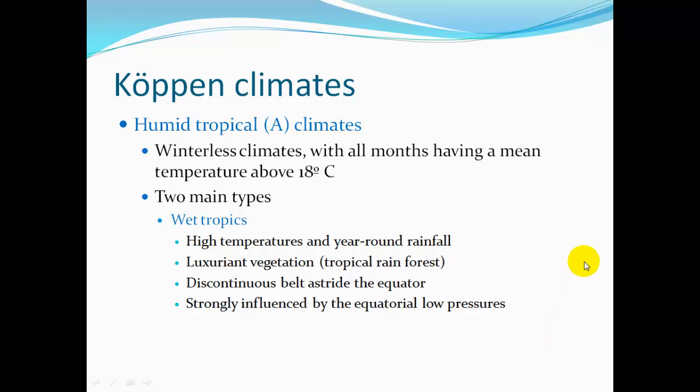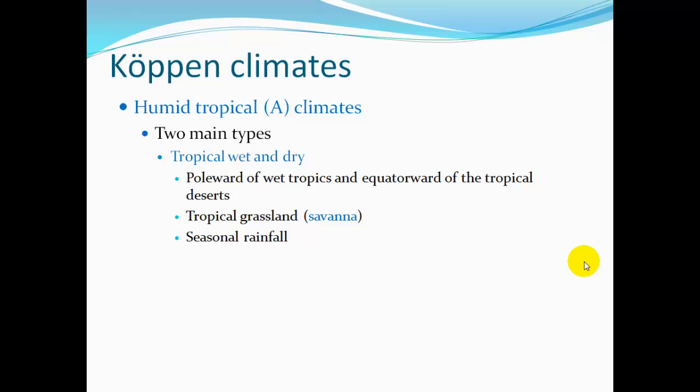Humid tropical A climates are winterless climates with all months having an average temperature above 18 degrees Celsius, about 68 degrees Fahrenheit. Two main types: the wet tropics, with high temperatures and year-round rainfall, luxurious vegetation and tropical rainforest, forming a discontinuous belt straddling the equator, strongly influenced by equatorial low pressure. The tropical wet-dry climate lies poleward of the wet tropics and equatorward of the tropical deserts, featuring tropical grassland savannas and seasonal rainfall — a wet season and a dry season.